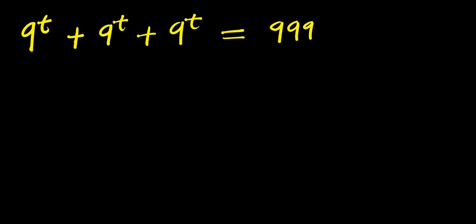Hello. How to solve 9^t + 9^t + 9^t = 999. We are solving for the value of t that will satisfy this equation. Now we can factor out 9^t because we have it in all three terms.